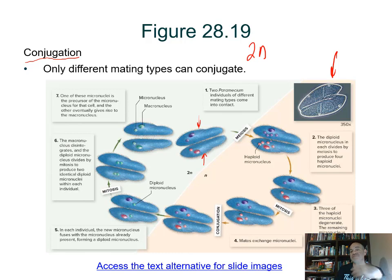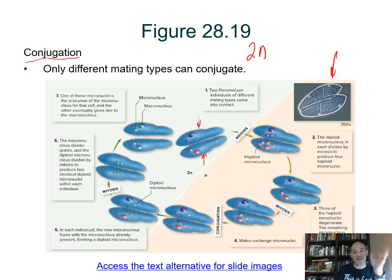Each of those nuclei in both the purple and pink individual are genetically different — recombinations of the two sets of chromosomes. Three of the four degenerate and go away, and only one stays. Those two remaining micronuclei in each individual are going to go through a mitosis.